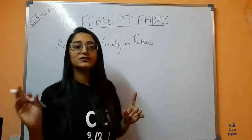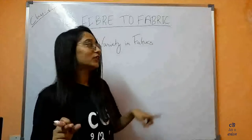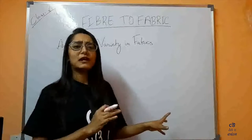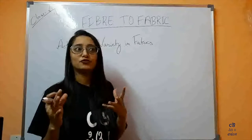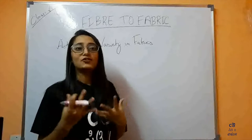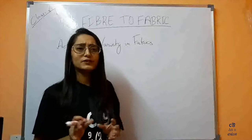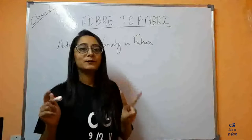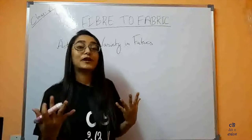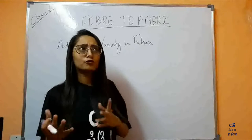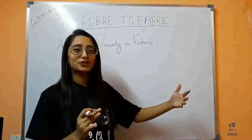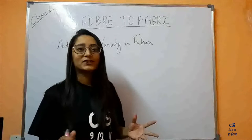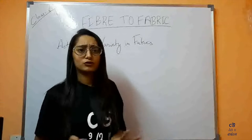Last time we studied about the second chapter, that is components of food, and this is the third chapter. Before going into the chapter, I would like to tell you a story about Pahil and Bojo. According to the NCERT syllabus, there are two students who won prize money in a quiz. What they did was, they decided to go to a particular store to buy clothes, and when they visited the store, they got different varieties of clothes around them.